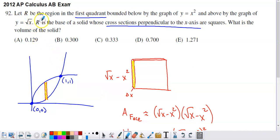They're talking about a region in the coordinate plane that sits in the first quadrant bounded below by the graph of y equals x squared and above by the graph of y equals square root of x. This region is the base of a solid whose cross-sections perpendicular to the x-axis are squares. What is the volume of the solid?